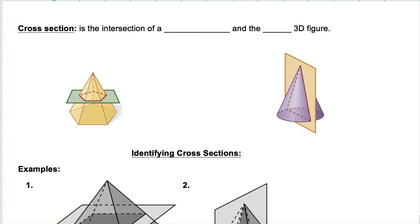For some reason, everybody wants to make this so much more complicated than it actually is. A cross section is the intersection of a plane, not an airplane everybody, and the solid 3D figure.